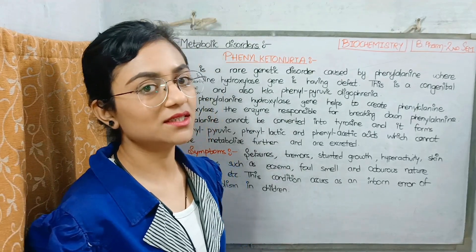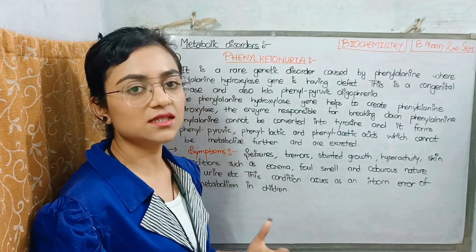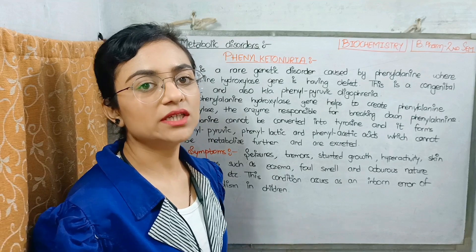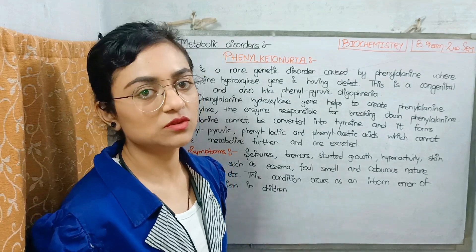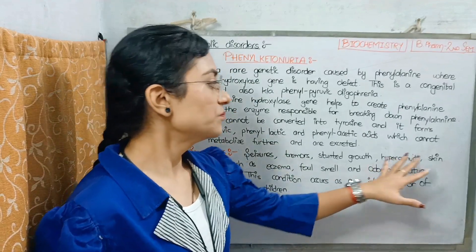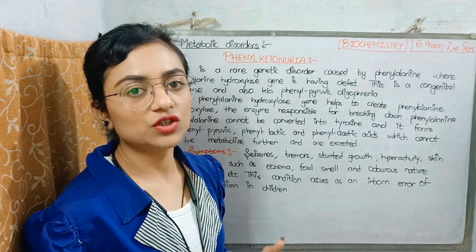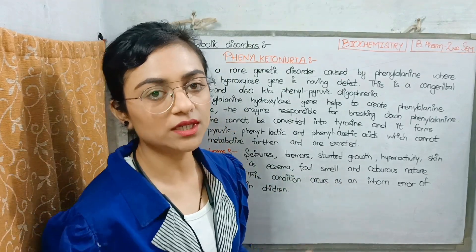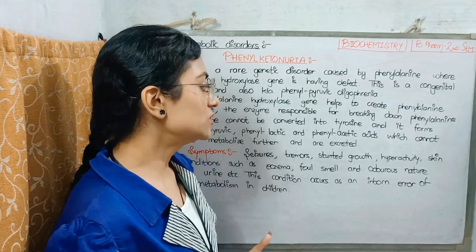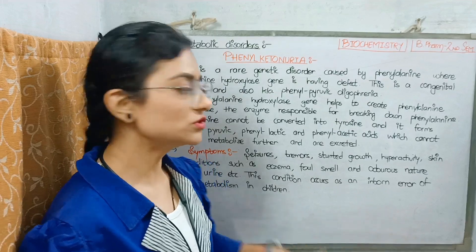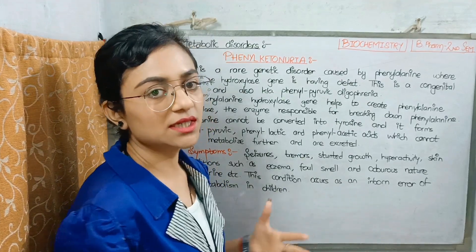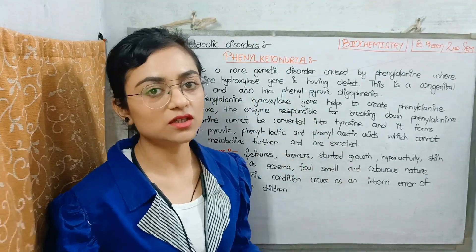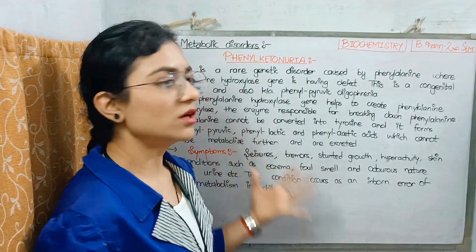If we talk about the symptoms of this disorder: it causes seizures, stunted growth — meaning the person stays small — skin irritation and allergies. There is also a characteristic musty smell in the urine. This condition is an inborn error of metabolism and is seen in children because it is a genetic disorder. So these were the symptoms and definition of phenylketonuria.